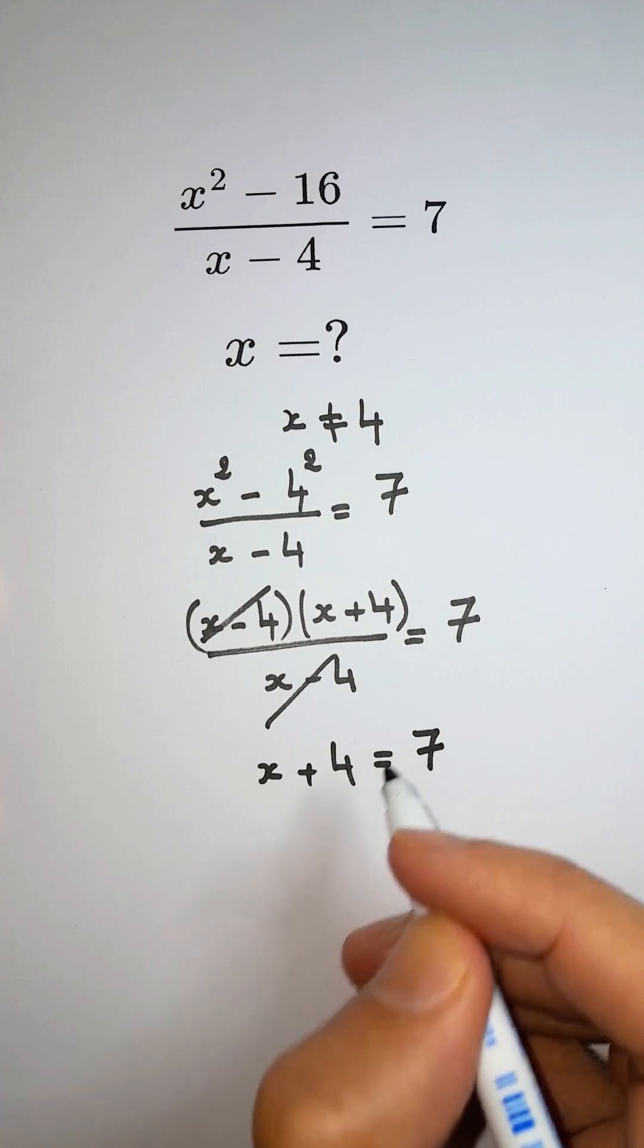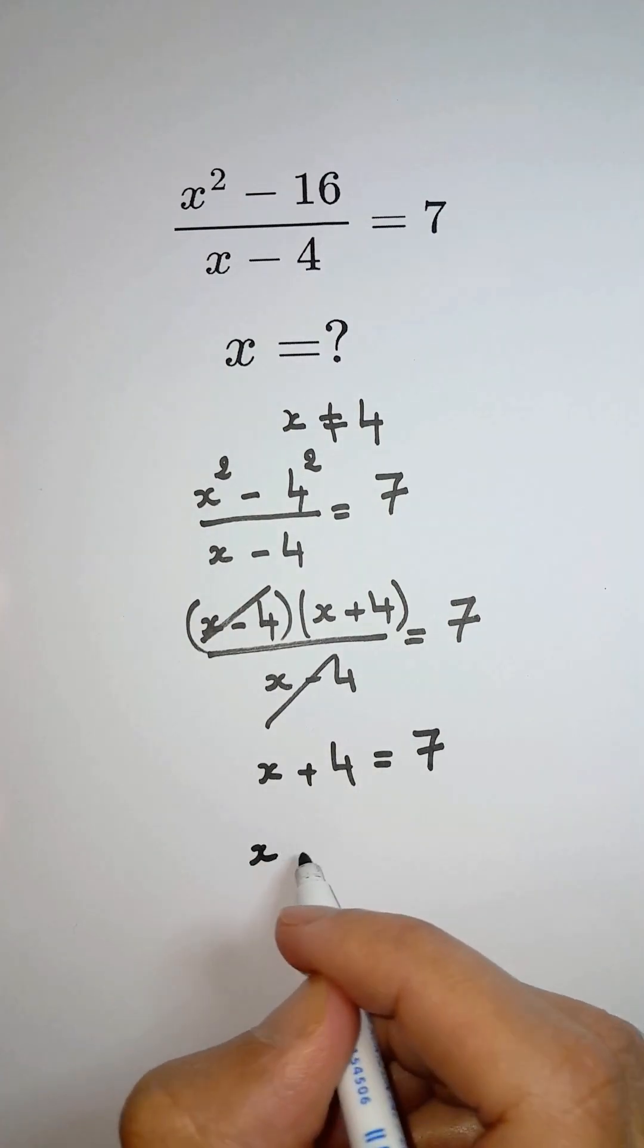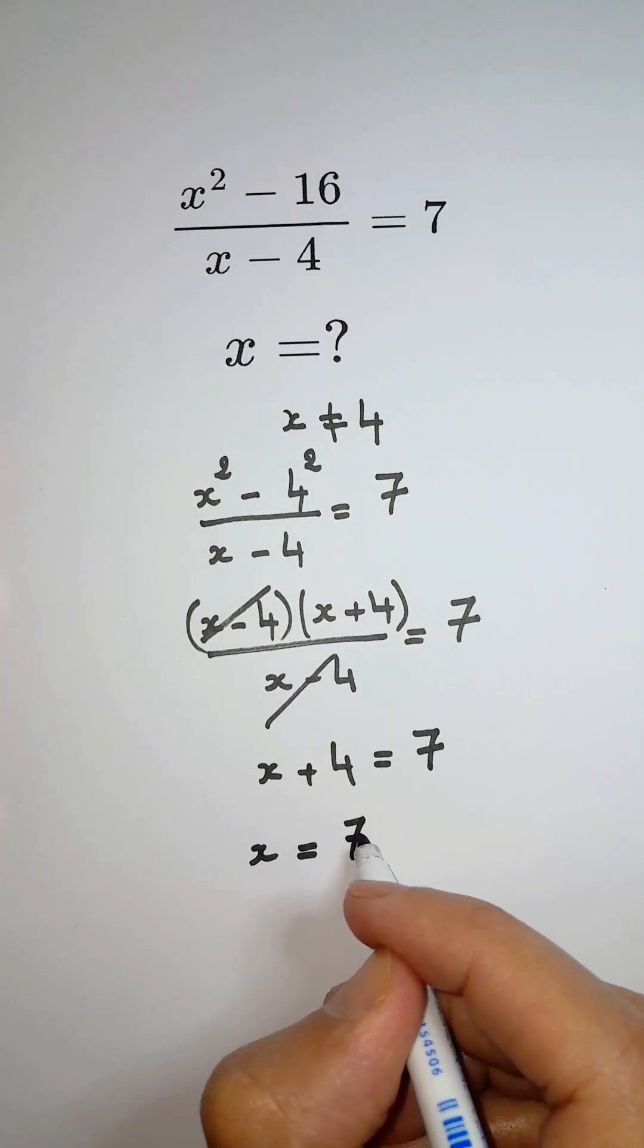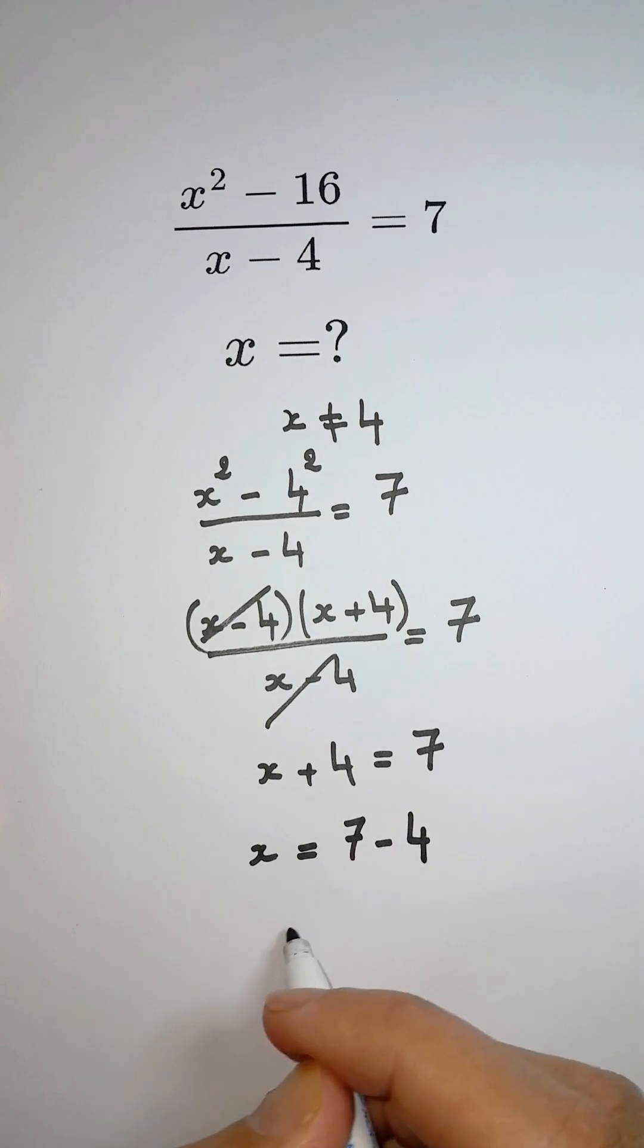We are left with a simple linear equation, x plus 4 equals 7. Subtract 4 from both sides and the solution is x equals 3. Thank you.